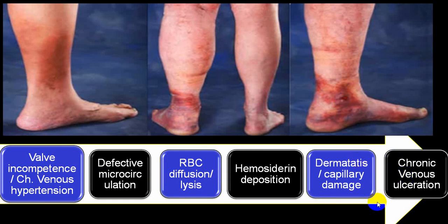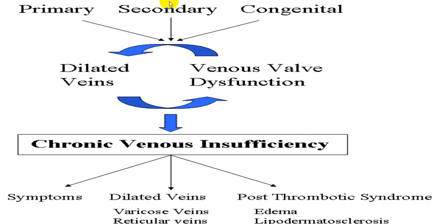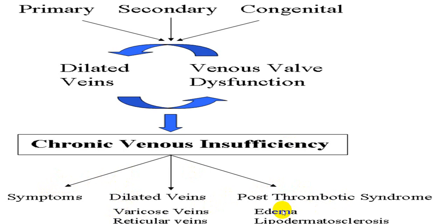Any etiology — primary, secondary, or congenital — results in venous valve dysfunction and dilated veins, which further worsen valve dysfunction in a vicious cycle, ending in chronic venous insufficiency. This can be initially asymptomatic, then you start getting dilated veins, varicose veins, reticular veins, telangiectasia, thrombus formation (post-thrombotic syndrome), edema, lipodermatosclerosis, and stasis.